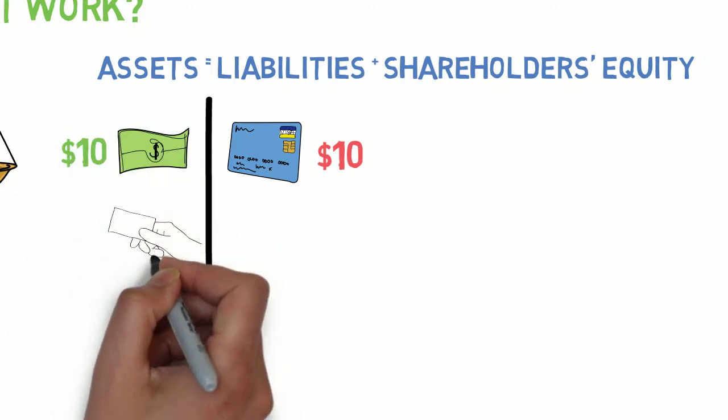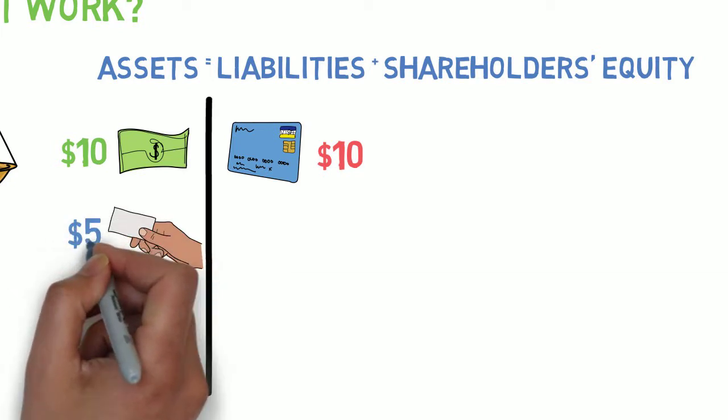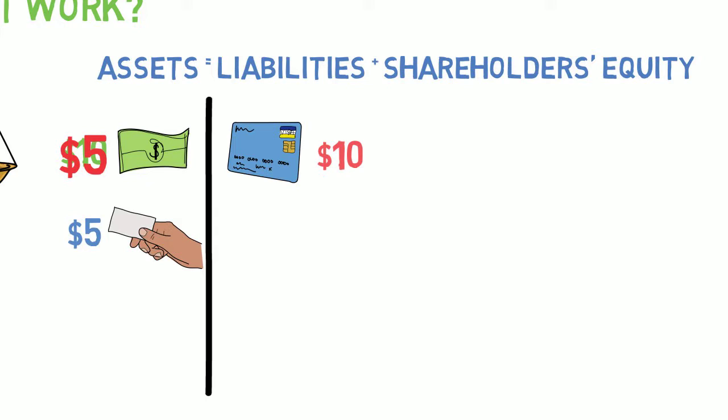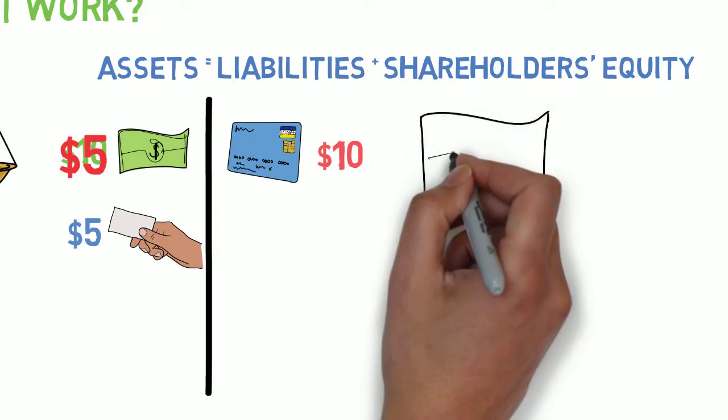But let's say we wanted to buy business cards for $5 and take it from our cash. We'd have to deduct it from our cash assets so that it would balance out on the asset side.